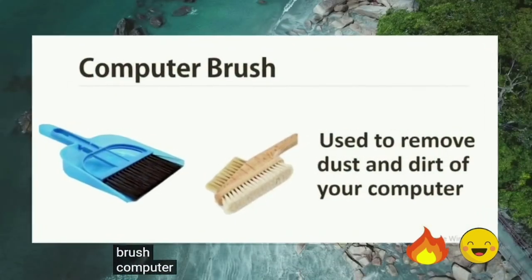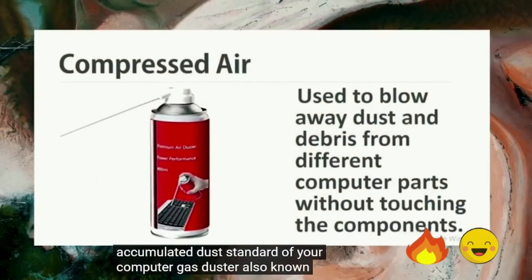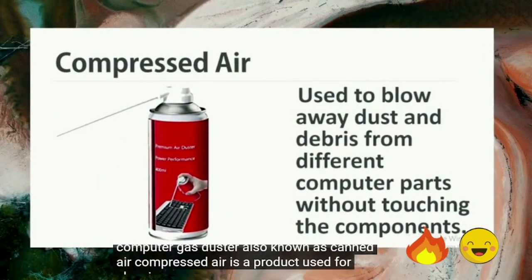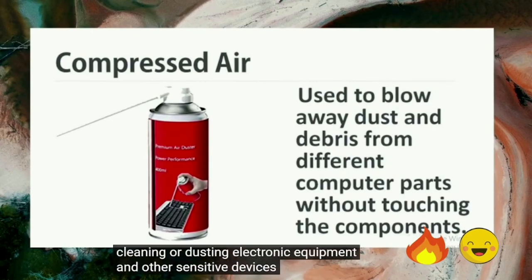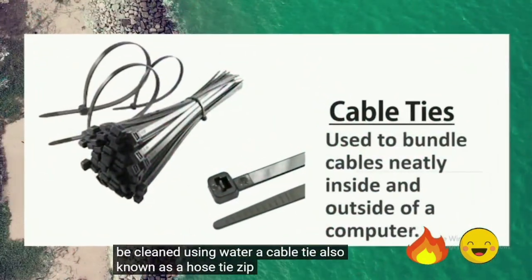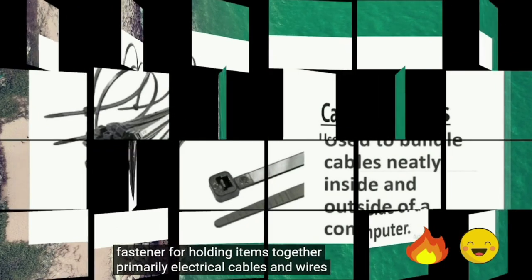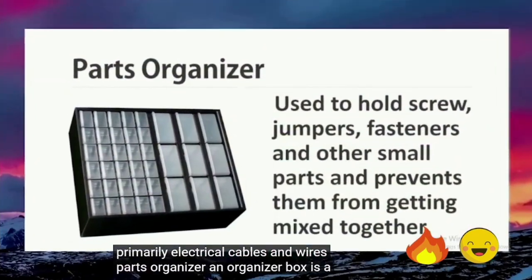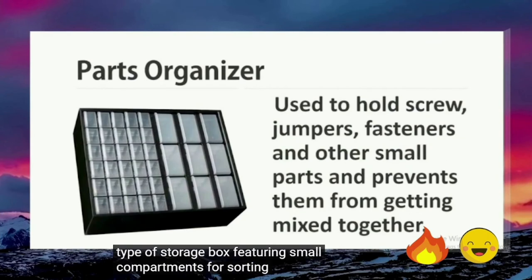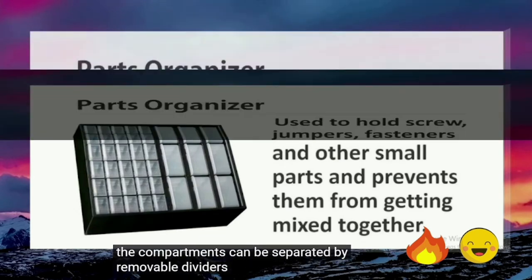A computer brush is used to remove accumulated dust from inside your computer. Compressed air, also known as canned air or gas duster, is a product used for cleaning or dusting electronic equipment and other sensitive devices that cannot be cleaned using water. A cable tie, also known as a zip tie or tie wrap, is a type of fastener for holding items together, primarily electrical cables and wires. A parts organizer is a storage box with small compartments for sorting components like screws, nails, bolts, and washers, with removable dividers.